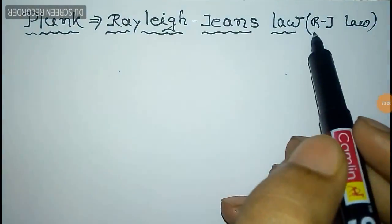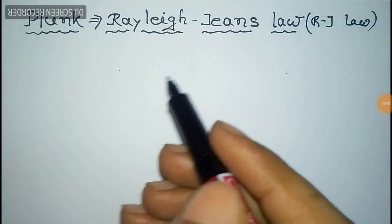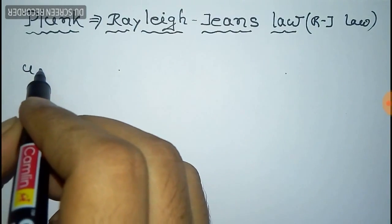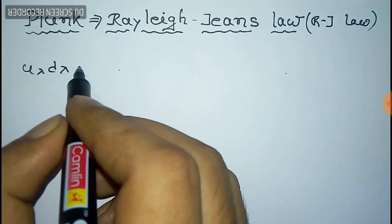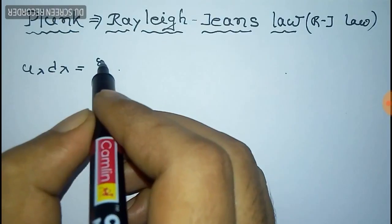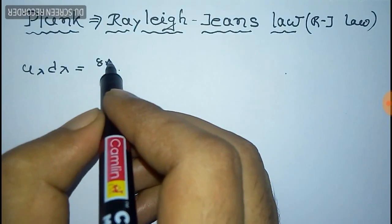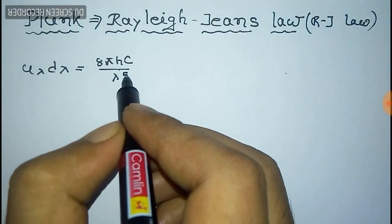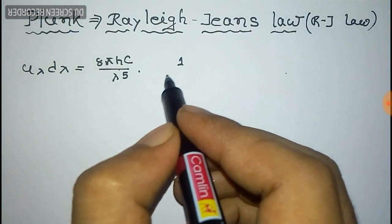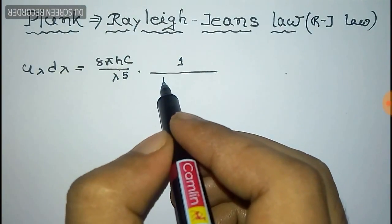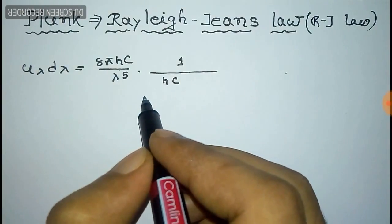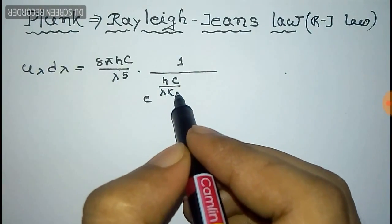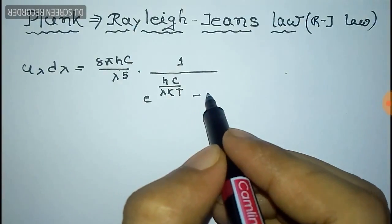We shall prove the Rayleigh-Jeans law from Planck's law. For this we shall take Planck's law first. Planck's law is: u(λ)dλ = (8πhc / λ^5) × (1 / (e^(hc/λkT) − 1)) dλ.